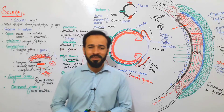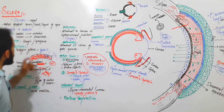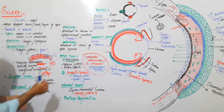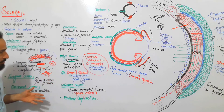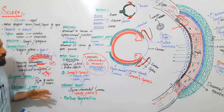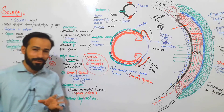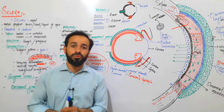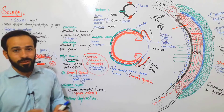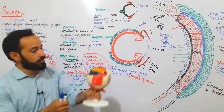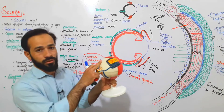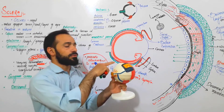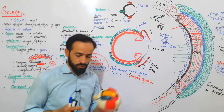Hello dear friends, welcome back. We are discussing the structure of the sclera. The previous lecture covered everything regarding the structure, composition, and parts of the sclera. Now, as mentioned at the end of the previous lecture, we will discuss those structures which pass through the sclera — what they are and what the important points are. This is our sclera, the white of the eye, and there are many structures which pierce and pass through the sclera to enter inside the eye.